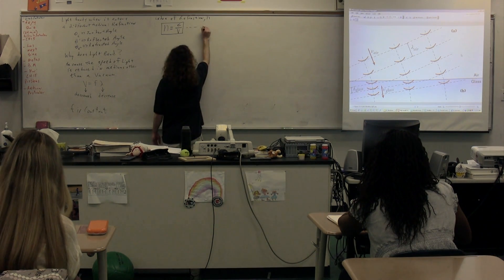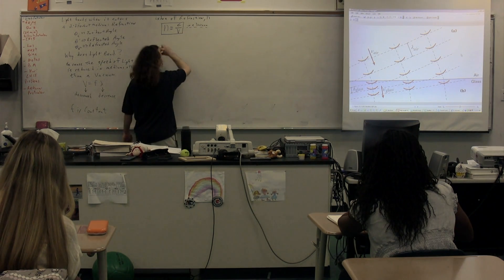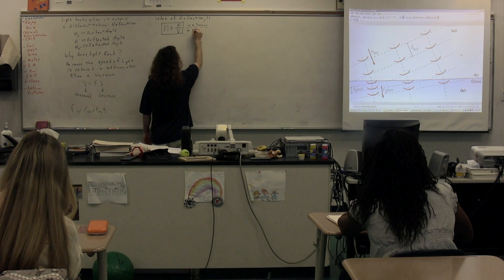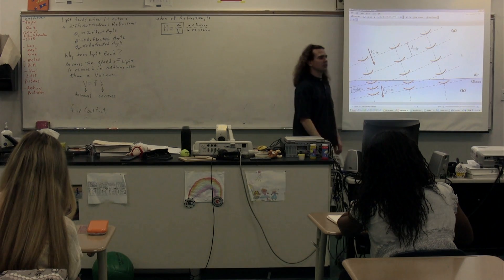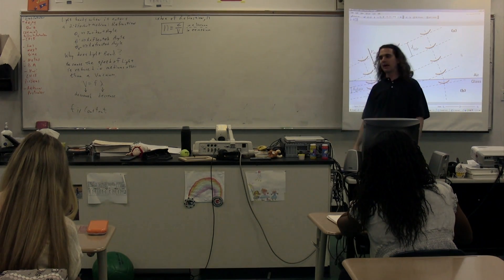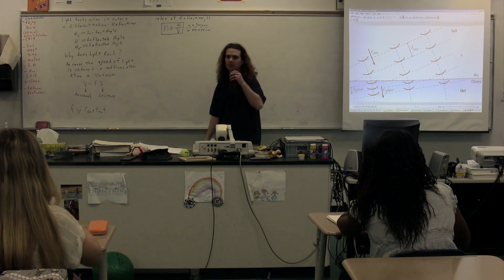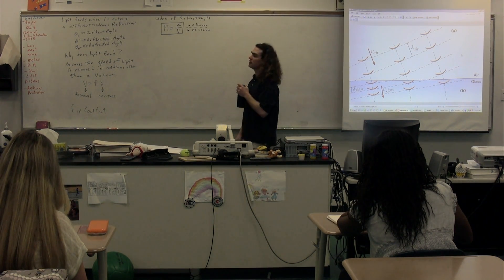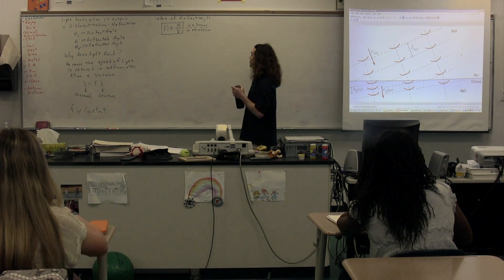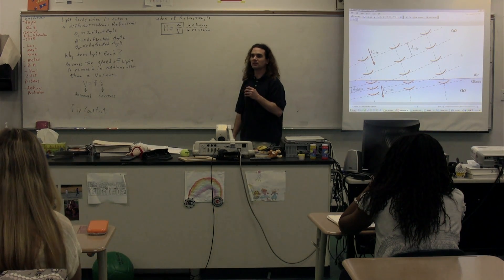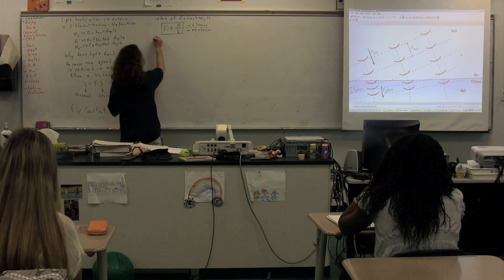C stands for the speed of light in a vacuum, and V stands for the speed of light in the medium. The dimensions on the index of refraction — work through it. The dimensions on C are meters per second; the dimensions on V are also meters per second. Meters per second divided by meters per second gives us nothing — so the index of refraction is dimensionless.